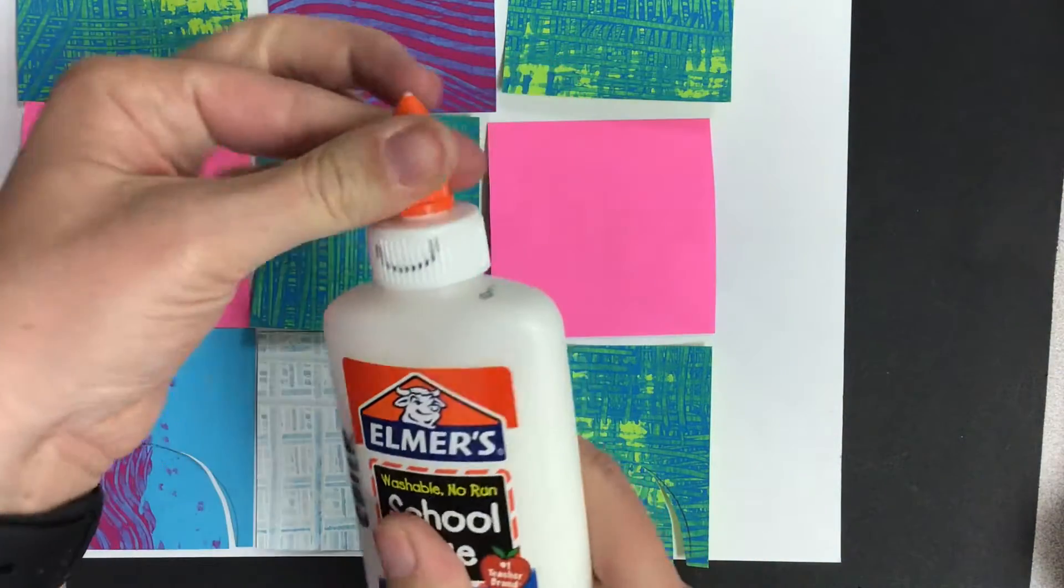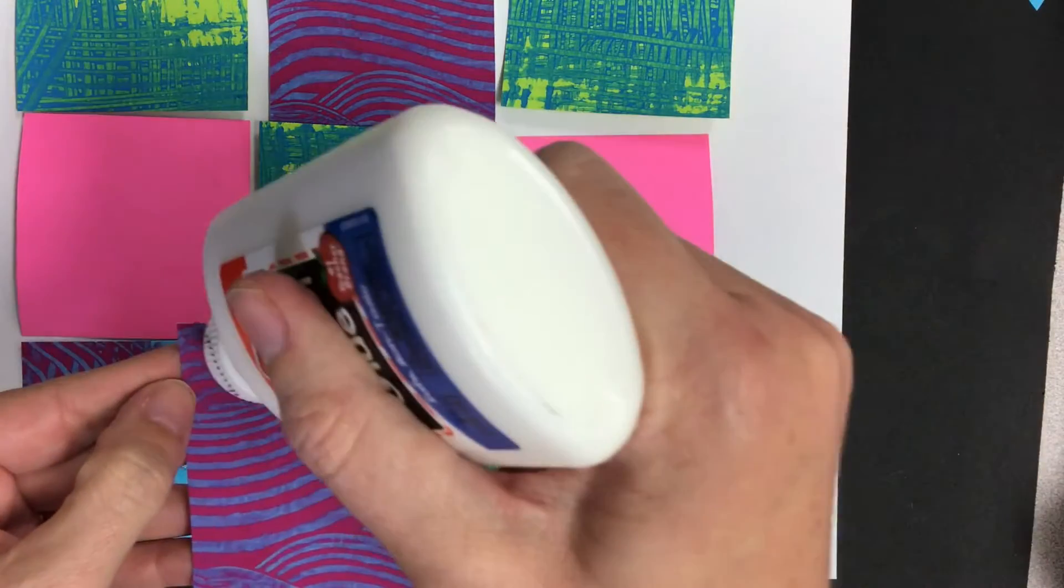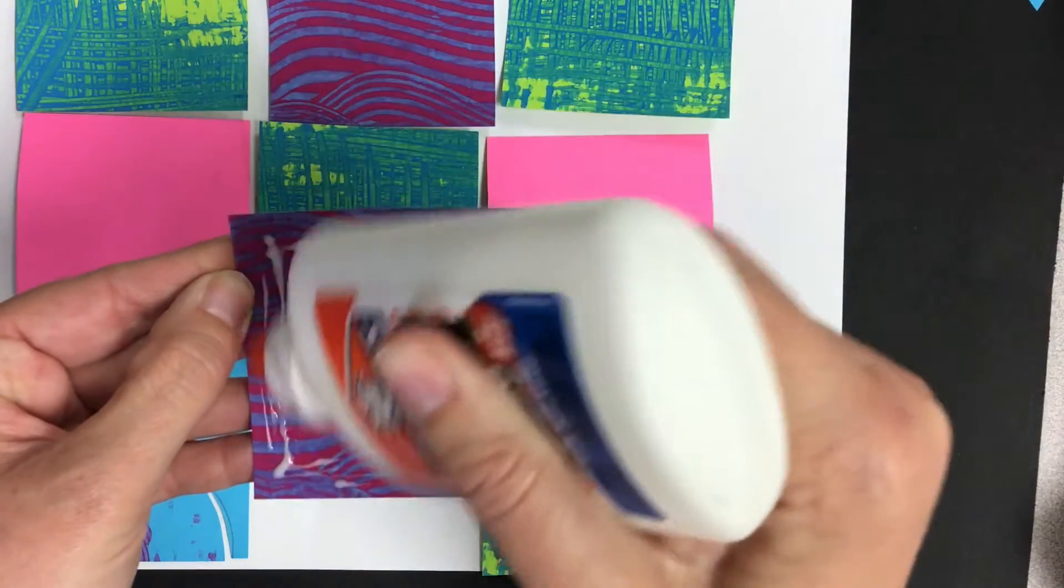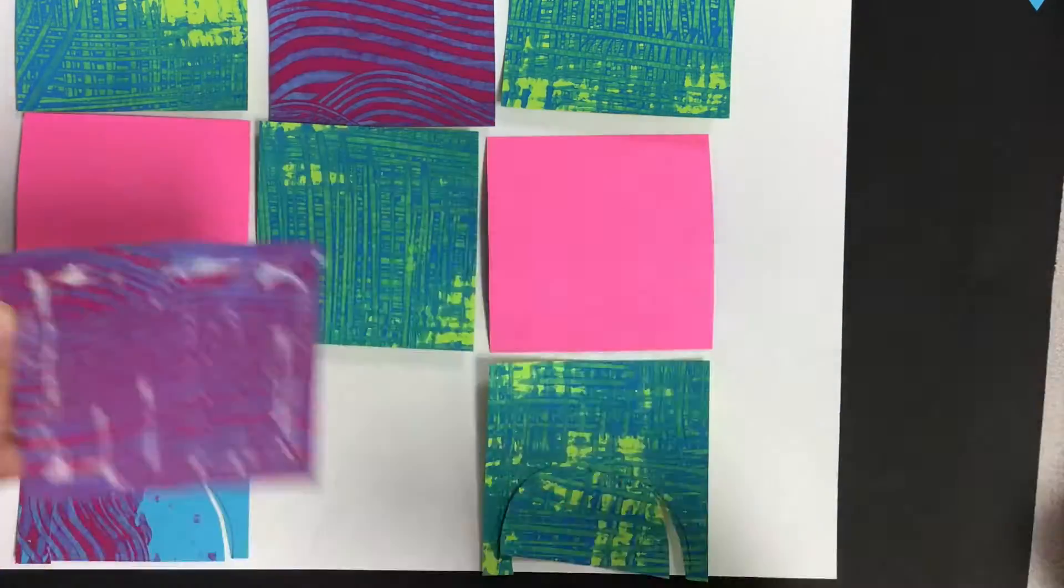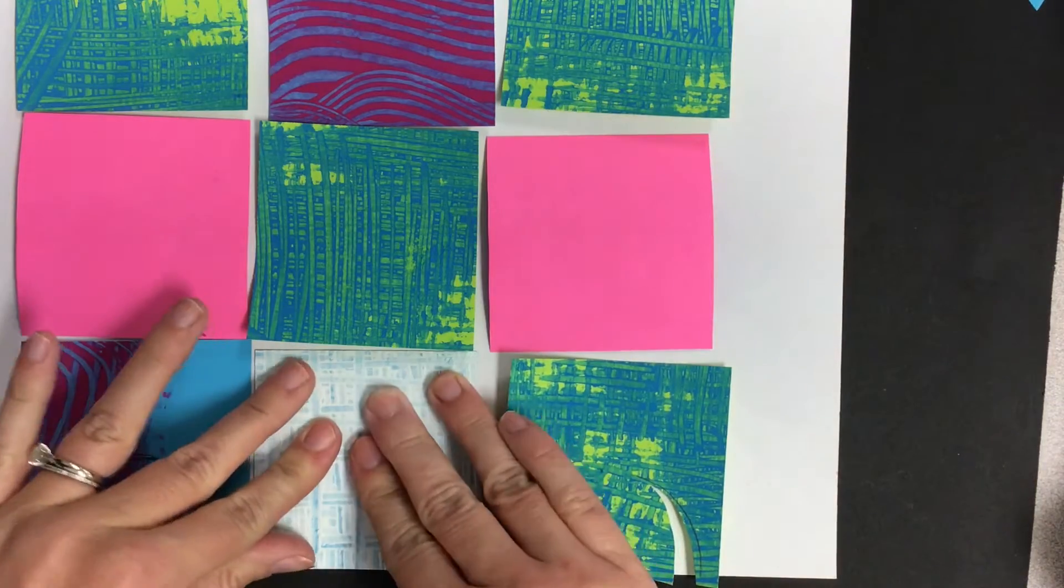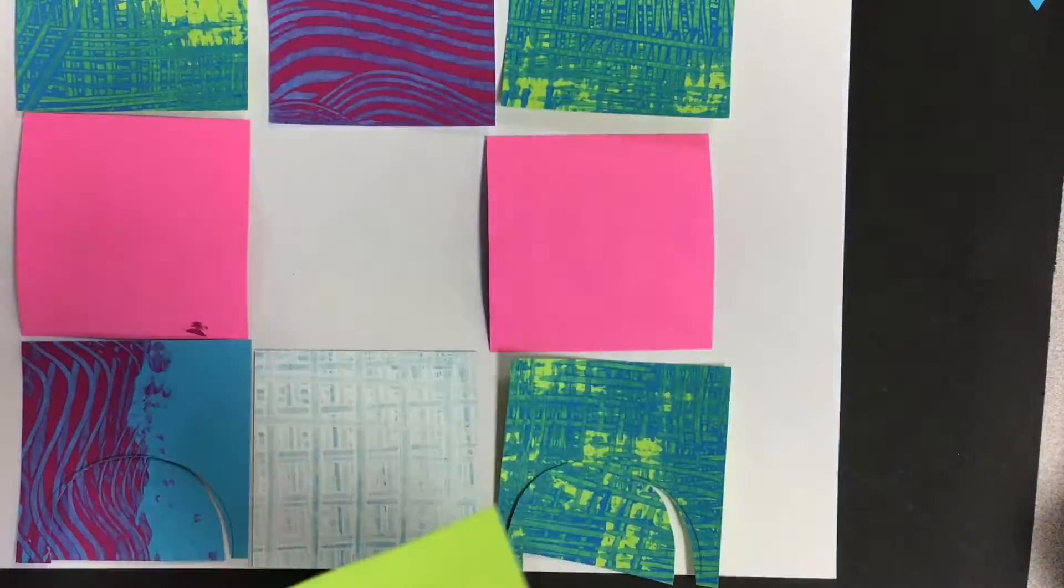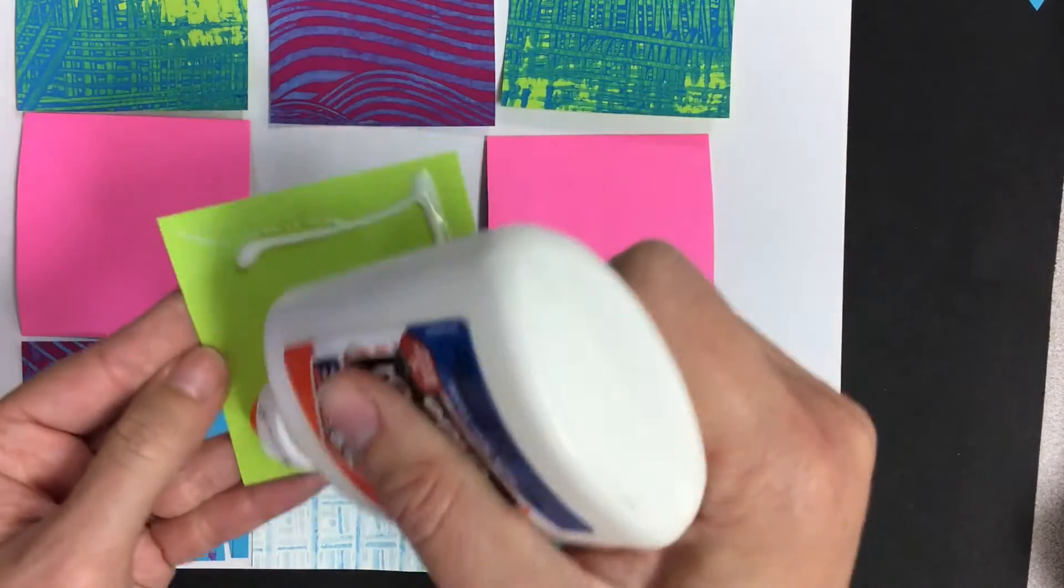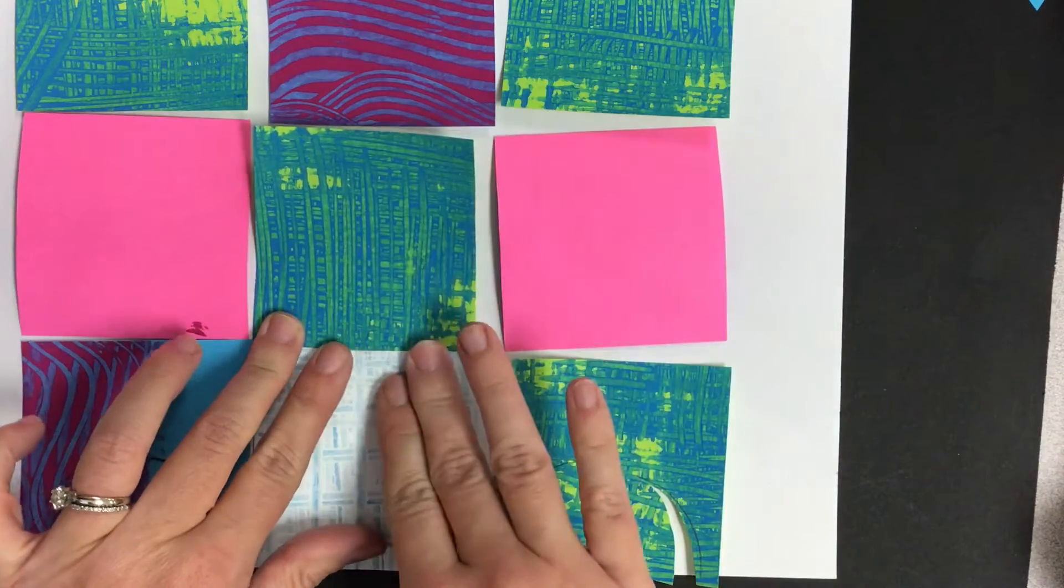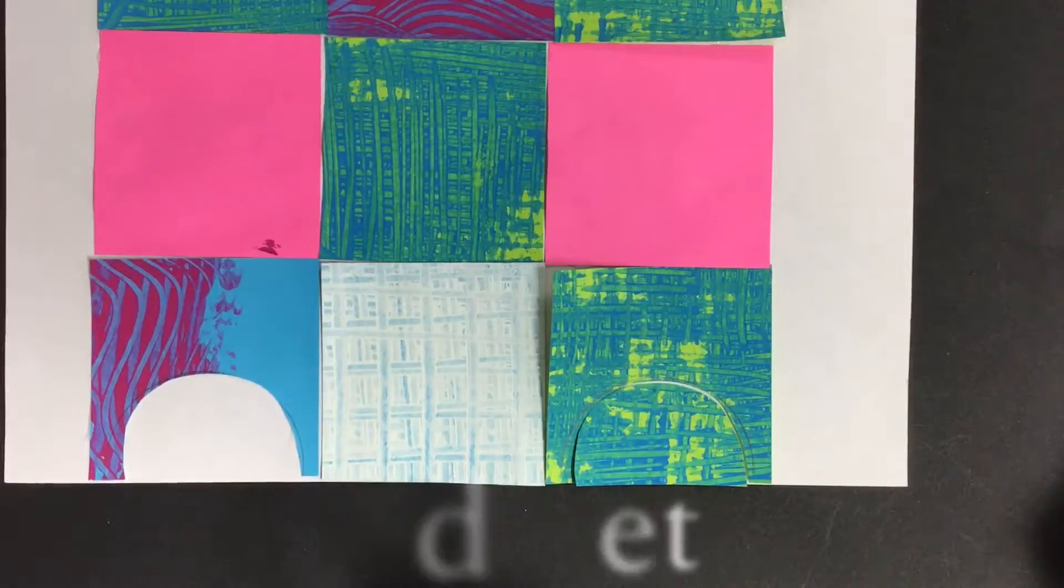Once you have your castle shapes where you want, it's time to glue. Open the glue bottle and make sure that you're not just putting a little dot in the center of the square. I want you to put glue all around the edge of the square and maybe a little squiggle in between. Line your square at the bottom of the page nice and straight and press down. We don't want any parts of that paper sticking up. Then when you glue your next square, make sure that it's lined up nice and cozy to the square next to it. We don't want any gaps in our castles.